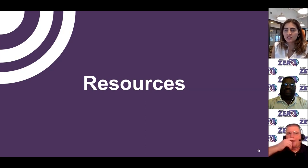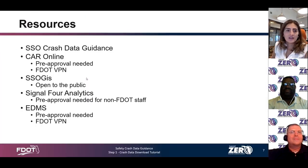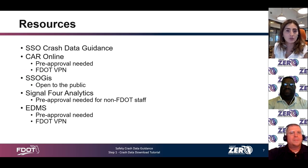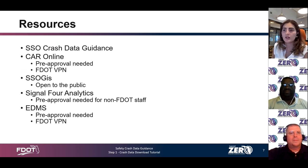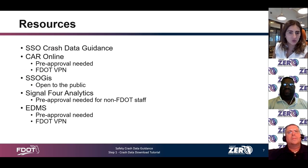These training modules are focused on directly applying the crash data guidance. It is recommended to have the crash data links handy to follow along and familiarize yourself with the available resources. The first resource is the State Safety Office crash data guidance document. The next is the Crash Analysis Reporting System — CAR Online requires pre-approval for individual user access as well as FDOT VPN to access the database. The SSO GIS query tool does not require pre-approval; it is open to the public.